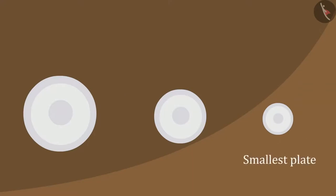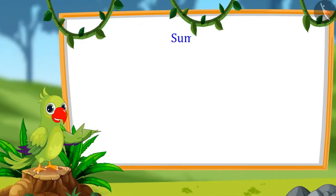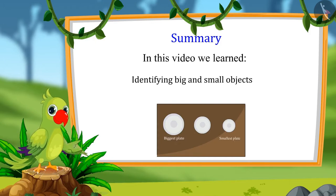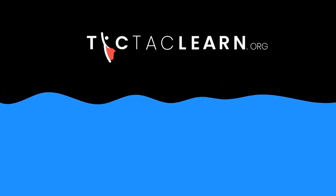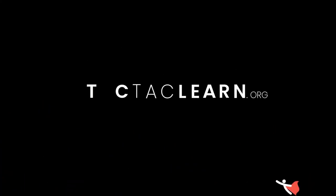Children, did you see? This is the smallest plate among these three plates, and this is the largest plate. So hey kids, that's it for today. In this video, we learned to identify big and small objects, and I really hope you understood this topic properly. Okay then, bye kids. Bye.